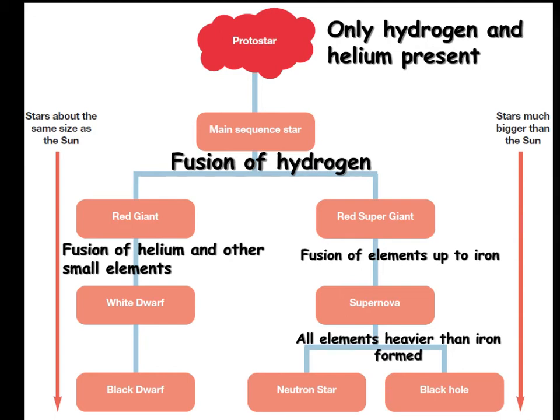When examiners assess you on the life cycle of a star they tend to look in three areas. First, can you describe the process of a star's life cycle — from forming as a nebula, collecting gas and dust, to a protostar, to a main sequence star, and then how it splits to end up as a black dwarf, neutron star, or black hole. The second area is can you explain how the forces acting on the star change: the gravitational force is always constant, directed toward the centre, and always trying to cause collapse — but how does the pressure force of nuclear fusion vary as it goes through each stage?